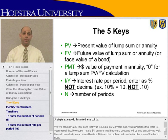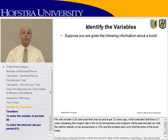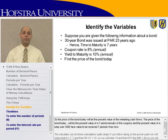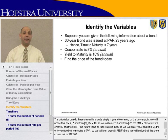A simple example to illustrate these points: we will consider a 30-year bond that was issued at par 23 years ago, which indicates there are seven years remaining. The coupon rate is 8% on an annual basis, and coupons will be paid annually. The yield to maturity on an annual basis is 10%, and the problem asks us to find the price of the bond today — which is the present value of the remaining cash flows: a seven-period annuity of coupons plus the present value of a $1,000 face value lump sum received seven periods from now.